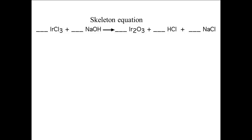Let's begin with the skeleton equation: IRCl3 plus NaOH gives IR2O3 plus HCl plus NaCl. I have placed a line in front of each compound as a place to put the coefficient for that compound. As part of this method, it is very useful to not assume that the lack of a coefficient means the coefficient is 1, but rather to place a 1 specifically in the space to show that you have chosen or determined a coefficient for that compound. Once you get comfortable with balancing equations, it will no longer be necessary to do this, and the practice can be stopped.